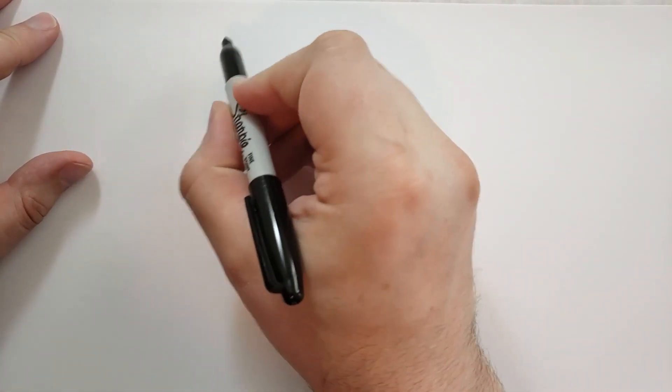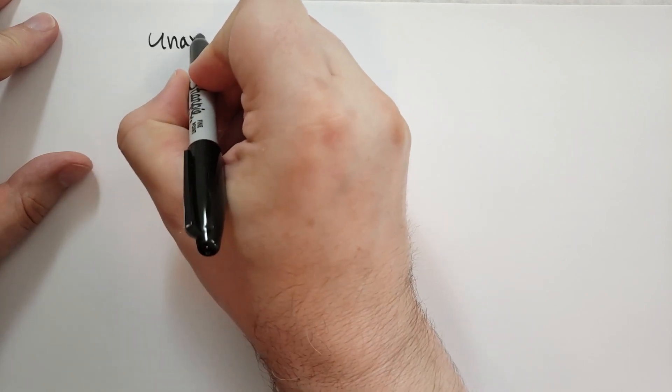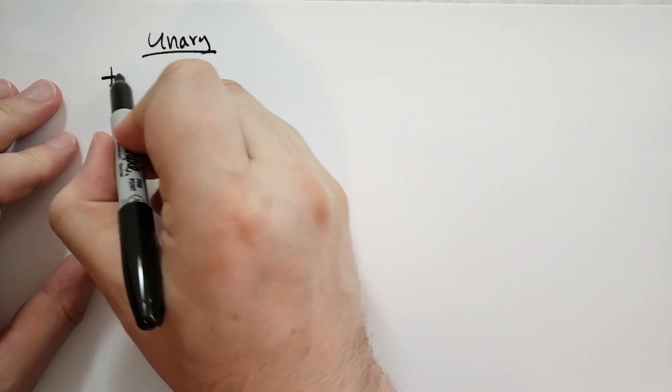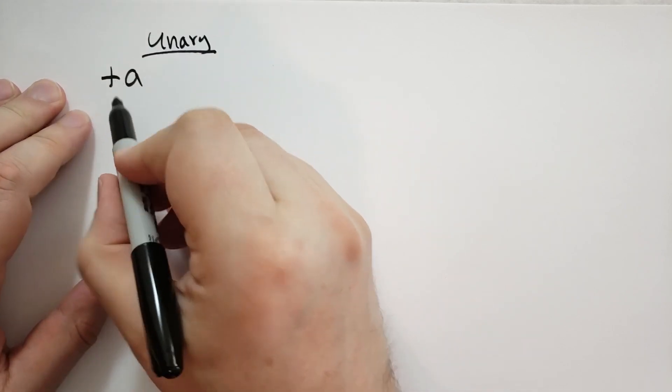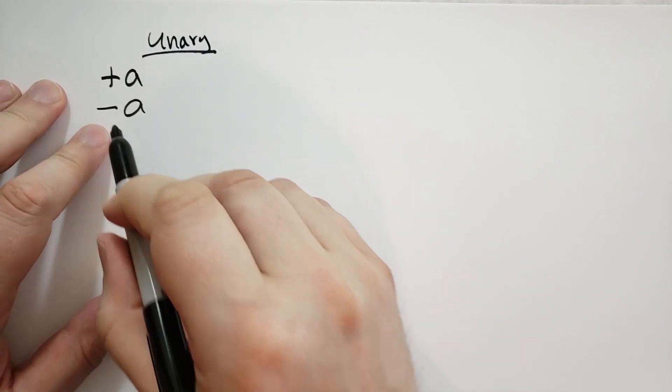You have unary operators. Unary means it just takes one argument. This is going to include plus A, which basically does nothing, and minus A, which inverts the sign.